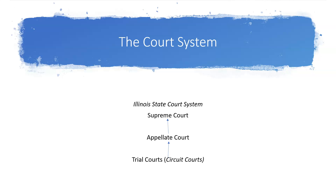Each party has the right to appeal the adverse decision or verdict to an appellate court within the appropriate jurisdiction. After a decision at the trial court level, the party that believes the application of the rule of law was improperly made, or that an interpretation of the law could have affected the outcome, has a right to appeal to the appellate court.